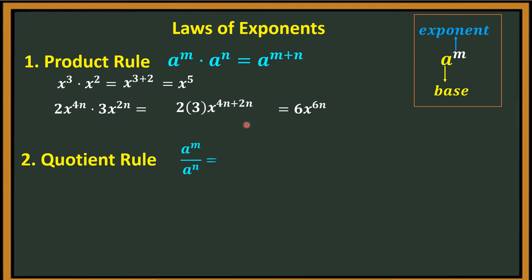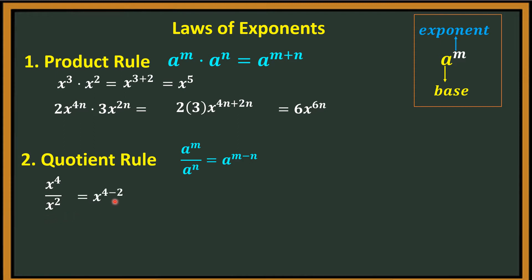Second rule is the quotient rule. In the quotient rule, a raised to m divided by a raised to n is equal to a raised to m minus n. In this case, we subtract the exponents if they have the same base. The same base here is a — you just copy and then subtract the exponents. Example: x to the fourth power divided by x squared, same base which is x. We just copy and subtract the exponents, so that is x squared.